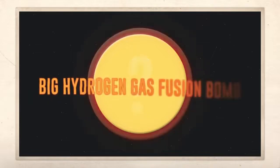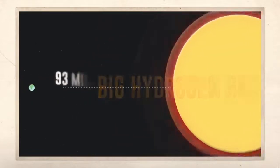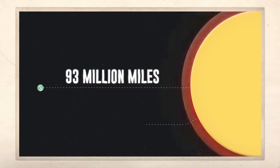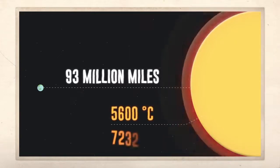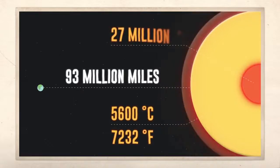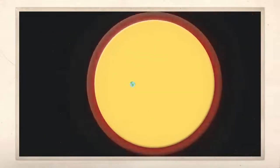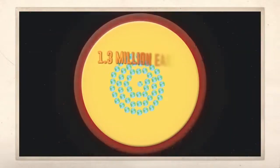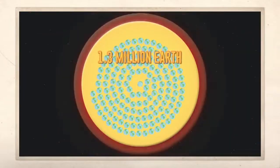What we do know is that the Sun is basically a big hydrogen gas fusion bomb, 93 million miles away from Earth, with a surface temperature of 5,600 degrees Celsius, which is 4,000 degrees higher than the melting point of steel. That's 7,232 degrees Fahrenheit, with a core temperature of 27 million degrees Fahrenheit. And if you weren't just sure how big the Sun is, you could fit 1.3 million Earths inside it.